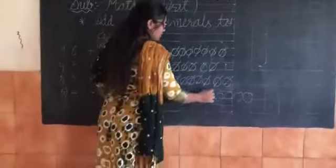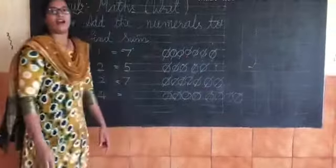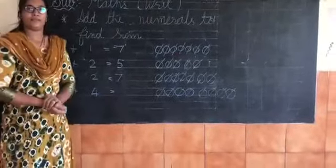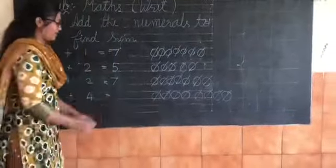Now count together. One, two, three, four, five, six, seven, eight, nine. Answer is nine. Right? No. This circle is eight. So answer is eight.